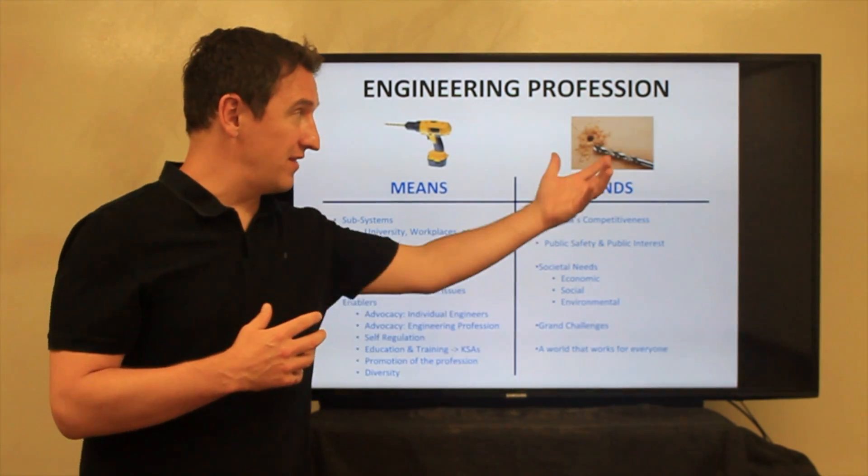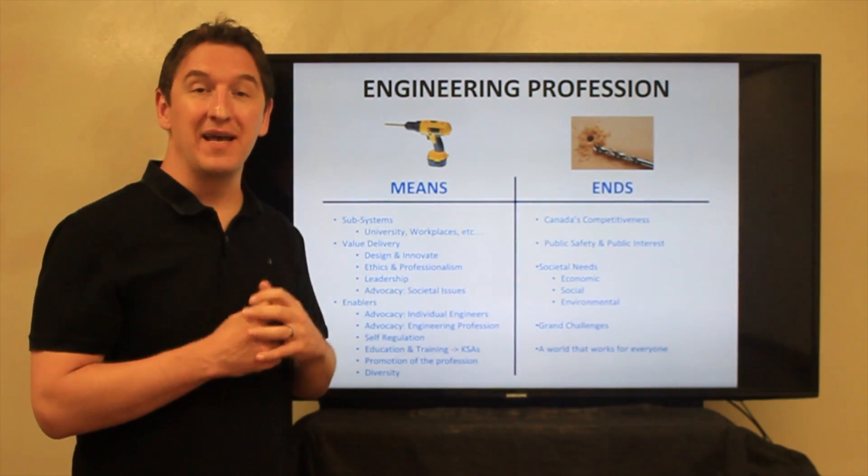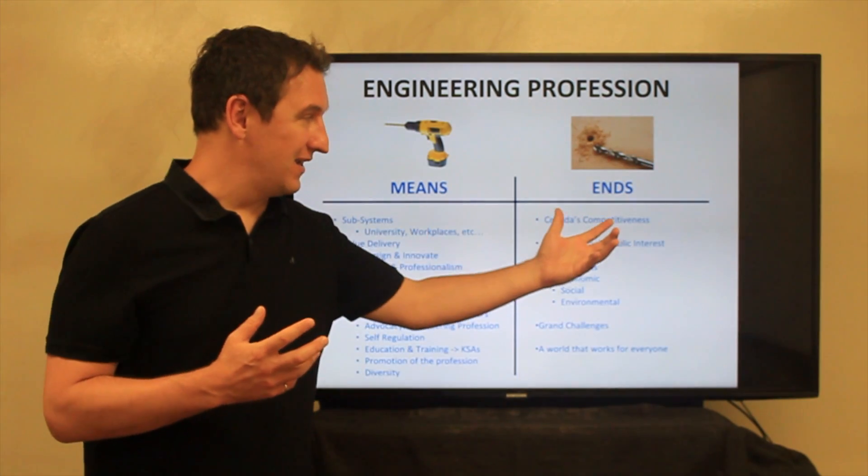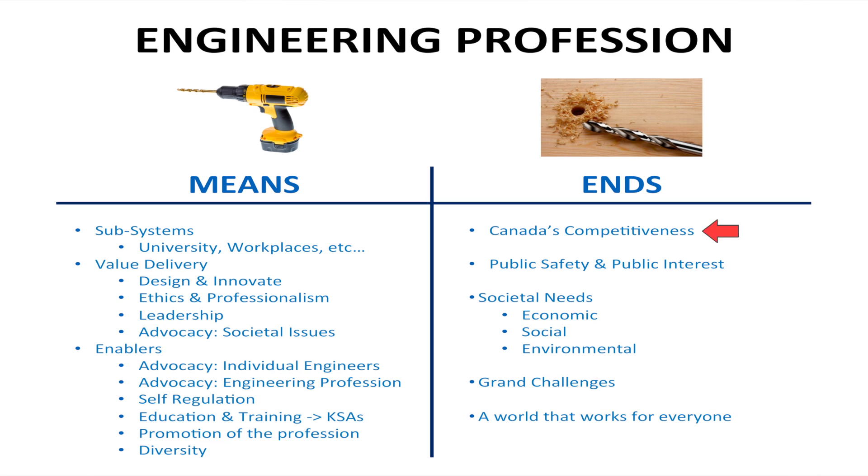And when you also consider the ends or the whole of the profession, what is the whole of the engineering profession? Again, quite a bit has been written. Not quite as much as the focus on the means, but there's this concept of the engineering profession helping to yield Canada's competitiveness, to promote public safety and public interest, to help meet broad societal needs, like the triple bottom line of economic, social, and environmental performance, to help solve the grand challenges like climate change of the 21st century, and you can even kind of zoom out and even take a bigger view of engineering helping to create a world that works for everyone.